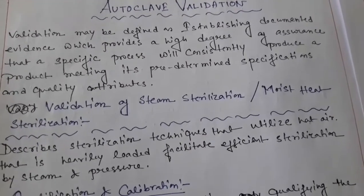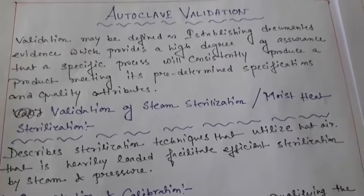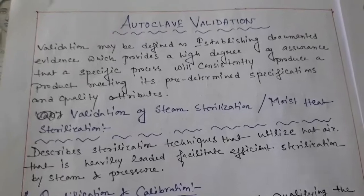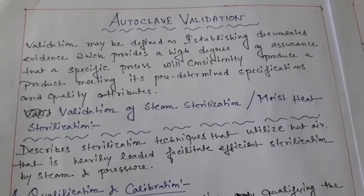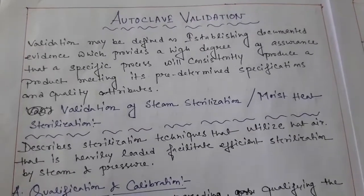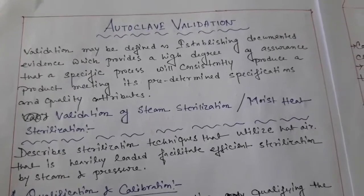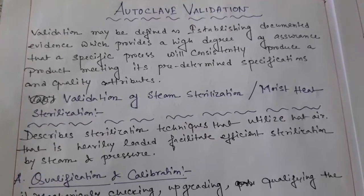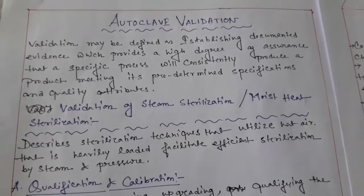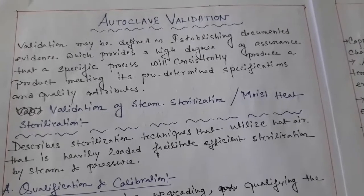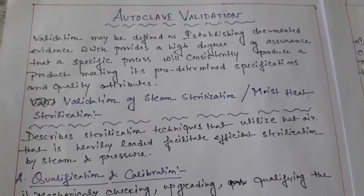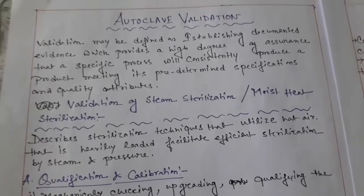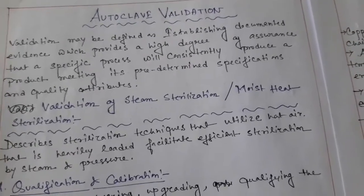First of all, what do you mean by validation? Validation may be defined as a one type of establishing documented evidence which provides a high degree of assurance that a specific process will consistently produce a product meeting its predetermined specifications and quality attributes. That means validation provides a high degree of assurance for the process of any type of equipment.